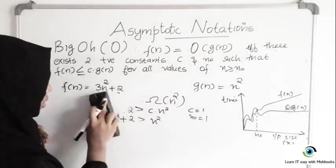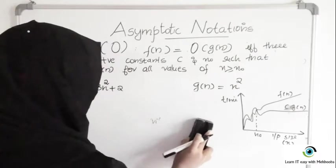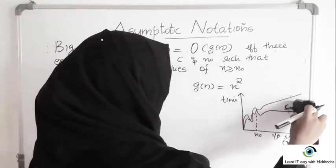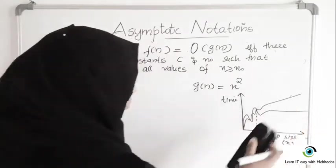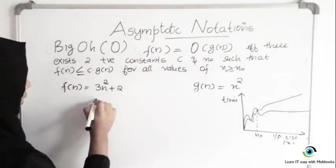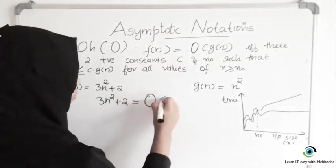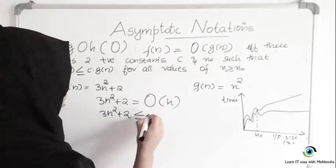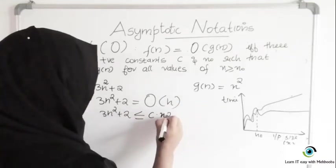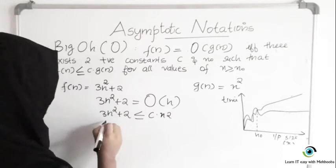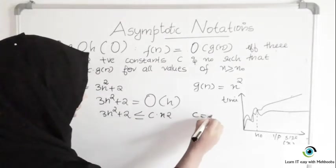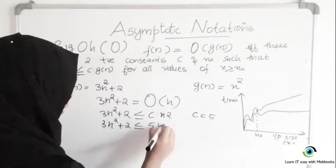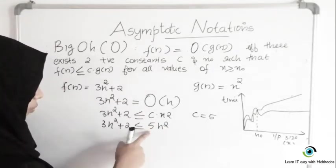The graph may change slightly. If I want to write that 3N square plus 2 is Big O of N square, I should meet the condition that 3N square plus 2 is less than or equal to C times G of N, which is N square. For C I am taking 5 — you can take any positive constant. So 3N square plus 2 is less than or equal to 5N square.